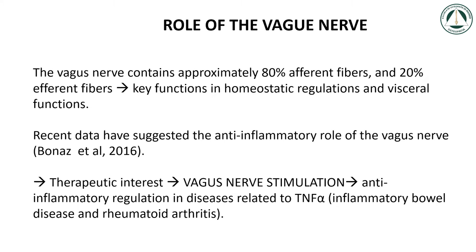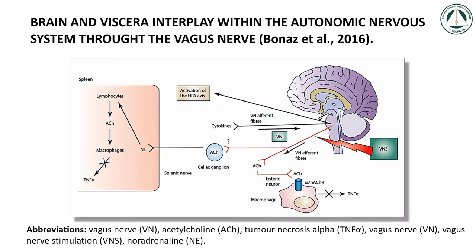Role of the vagus nerve. The vagus nerve contains approximately 80% afferent fibers and 20% efferent fibers. They are key functions in homeostatic regulations and visceral functions. Recent data have suggested the anti-inflammatory role of the vagus nerve (Bonaz et al., 2016). There is a therapeutic interest in vagus nerve stimulation to produce anti-inflammatory regulation in diseases related to TNF-alpha, inflammatory bowel disease, and rheumatoid arthritis.